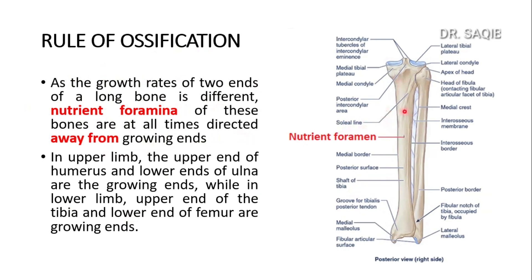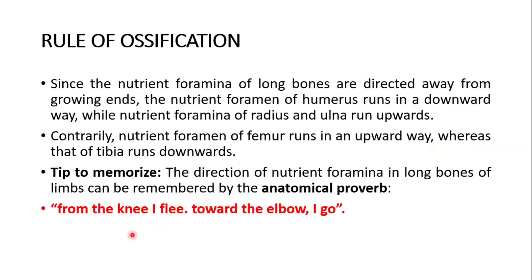You could see this tibia — this is the largest nutrient foramen. I have shown you this picture of the nutrient foramen of the tibia. In the upper end of the humerus and the lower end of the ulna are the growing ends, while in the lower limb the upper end of the tibia and lower end of the femur are the growing ends. Since the nutrient foramina of long bones are directed away from growing ends, the nutrient foramen of the humerus runs in a downward way while nutrient foramina of the radius and ulna run upwards.